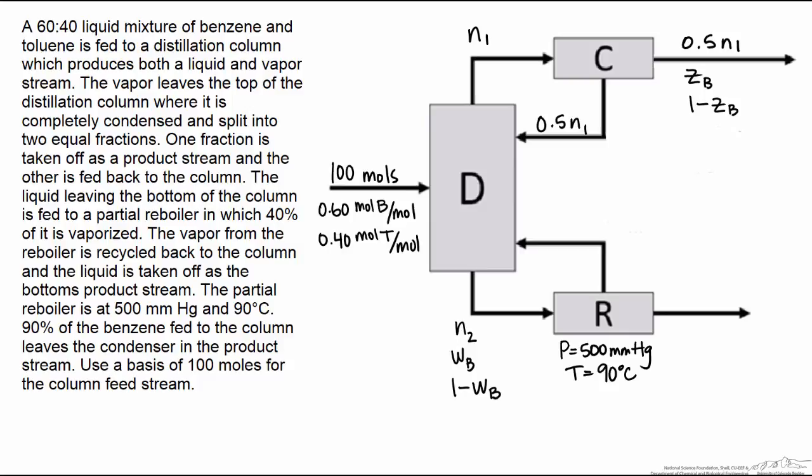Let's look at the stream coming out of the reboiler here as a product stream. This we're going to call N3, and it has a benzene mole fraction of X sub B, and toluene is 1 minus X sub B. Finally, here we have N4. It has a mole fraction of Y sub B for the benzene, and 1 minus Y sub B for the toluene.